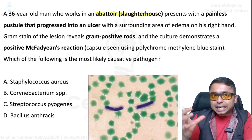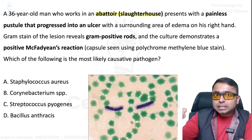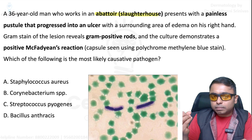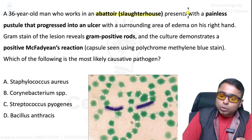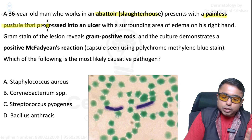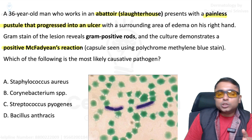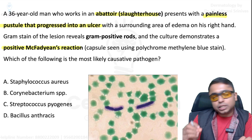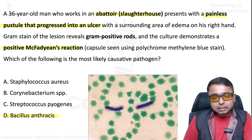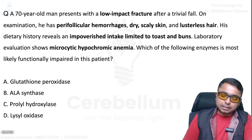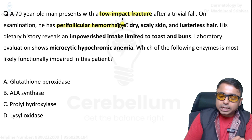A slaughterhouse worker — this can be called a recent FMG-type question. A painless pustule that progresses into an ulcer, described as a malignant pustule, and most importantly showing a positive Mcfadyean reaction. The organism is Bacillus anthracis — option D.